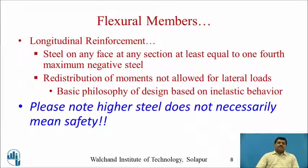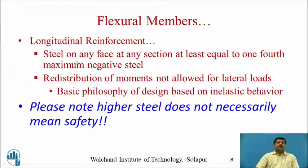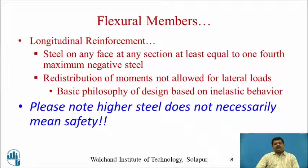Another important clause is that the steel on any face at any section must be at least equal to one-fourth of the maximum negative steel. This applies to both the bottom face and lateral vertical faces of the beam. The steel at the top — the maximum negative steel calculated at the joint or continuous end — its one-fourth must be present at the bottom face and at the vertical faces of the beam as well.